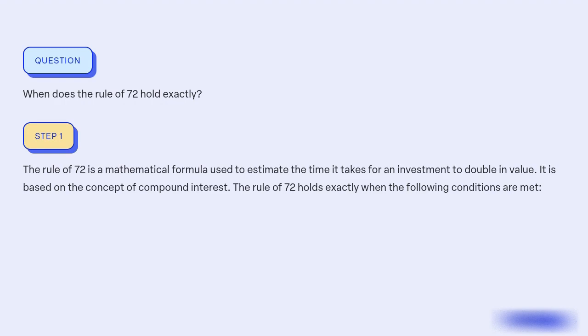What are the specific conditions in which the rule of 72 is applicable? Our objective is to determine the exact circumstances in which the rule of 72 is valid. The rule of 72 is a mathematical formula used to estimate the time it takes for an investment to double in value. It is based on the concept of compound interest. The rule of 72 holds exactly when the following conditions are met.